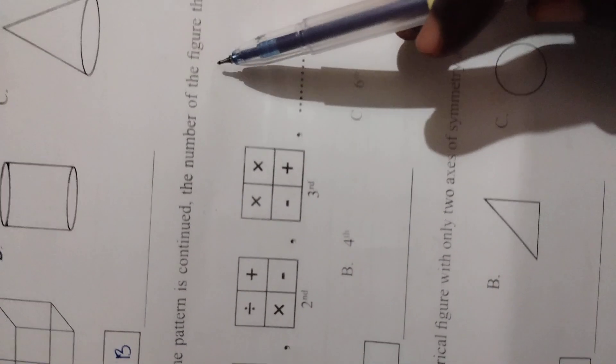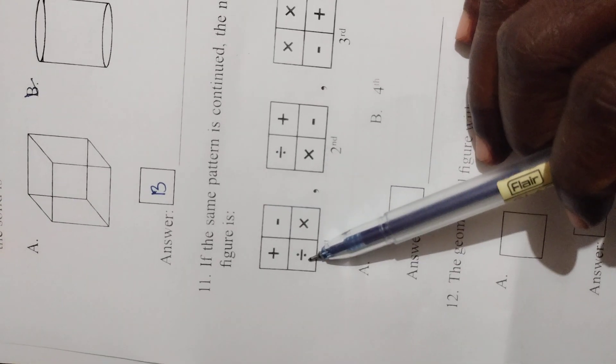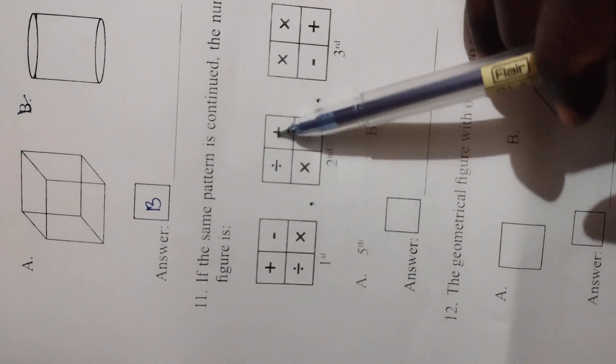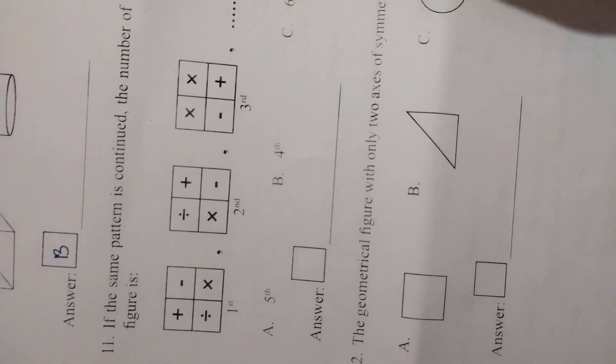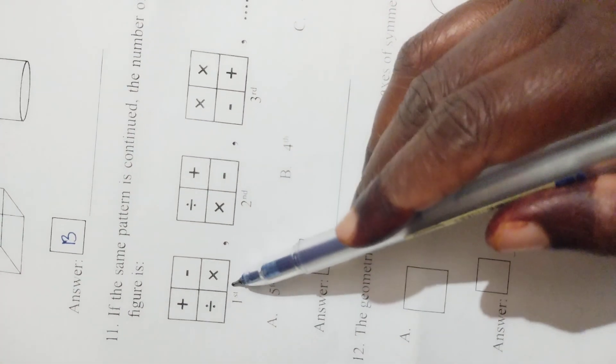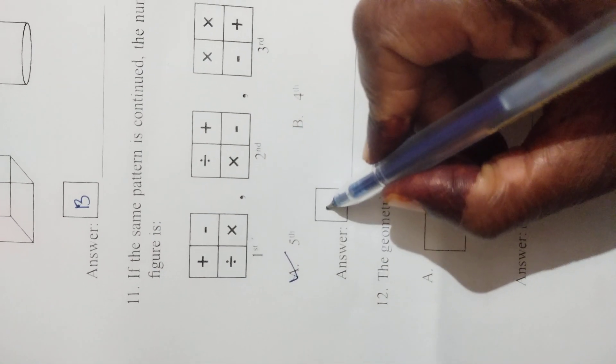If the same pattern here is continued, the number of the figure that will be the same as the first figure is. We can change like this: plus, minus, divided by, into, divided by, plus, into, minus. This is first one, second one like this we are writing. This is the fifth place we can get the same figure. So we can write here 5, A, fifth place, fifth figure.